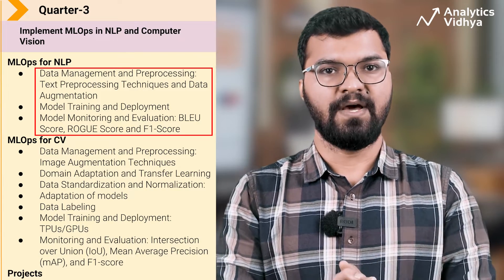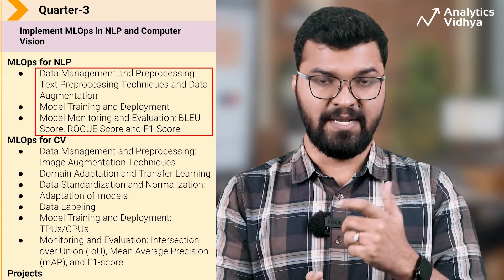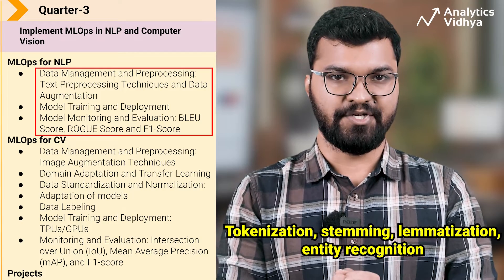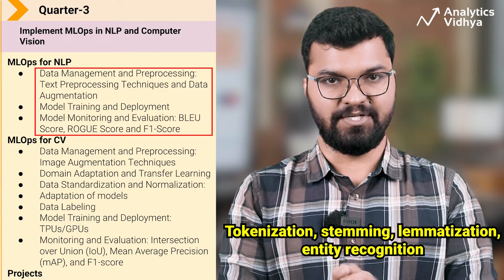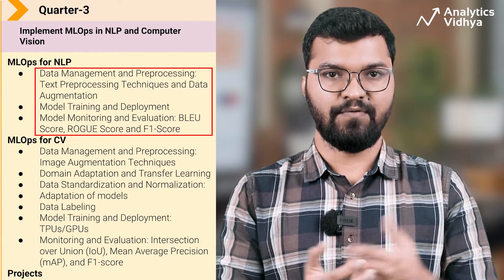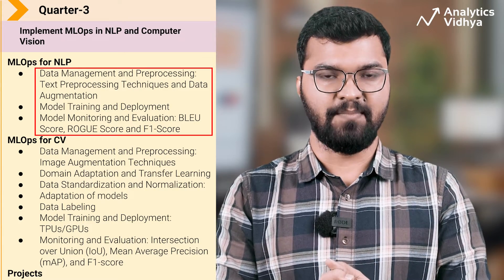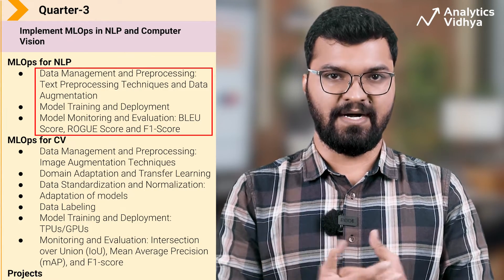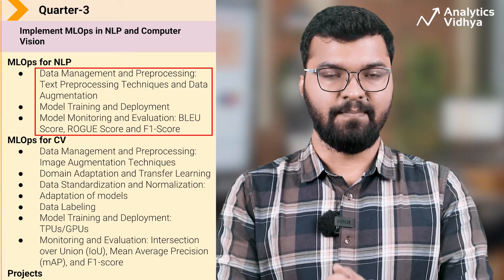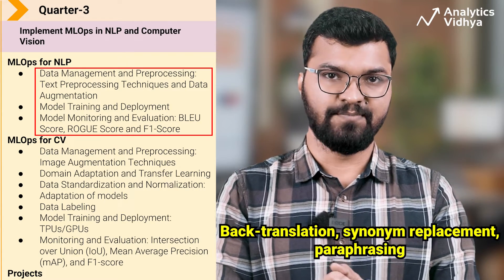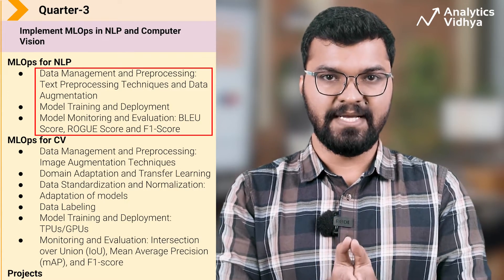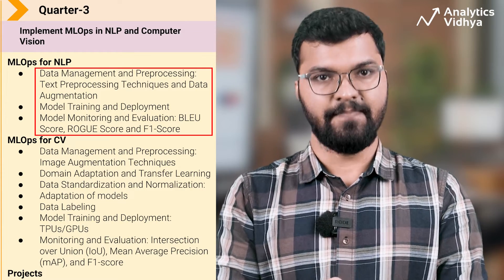Key areas to cover for NLP: First is data management and pre-processing, which includes text pre-processing techniques such as tokenization, stemming, lemmatization, and entity recognition. This is followed by data augmentation — artificially increasing the training set by creating modified copies using existing data — with techniques like back translation, synonym replacement, and paraphrasing to address NLP's inherent data scarcity.